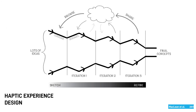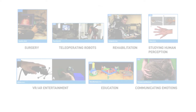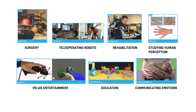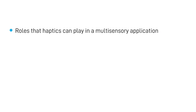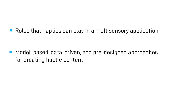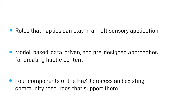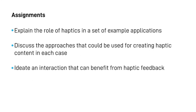Haptic designers often iterate through these four essential components of browsing, sketching, refining, and sharing their process to create new experiences for training, rehabilitation, entertainment, education, and many other applications. In this chapter, you learned about the roles that haptics can play in a multisensory application, model-based, data-driven, and pre-designed approaches for creating haptic content, and four components of the HACS-D process and existing community resources that support them.